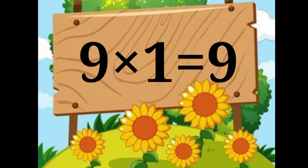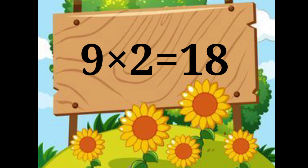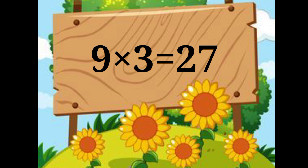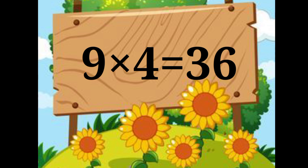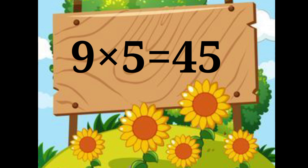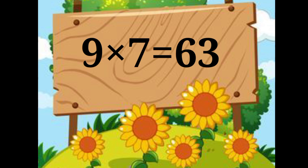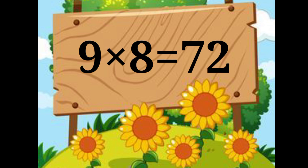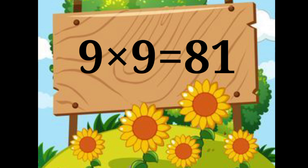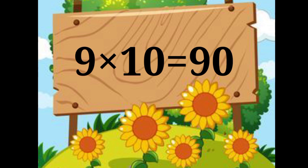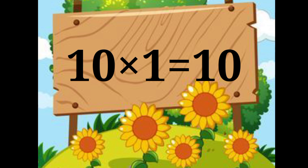9 ones are 9. 9 twos are 18. 9 threes are 27. 9 fours are 36. 9 fives are 45. 9 sixes are 54. 9 sevens are 63. 9 eights are 72. 9 nines are 81. 9 tens are 90.